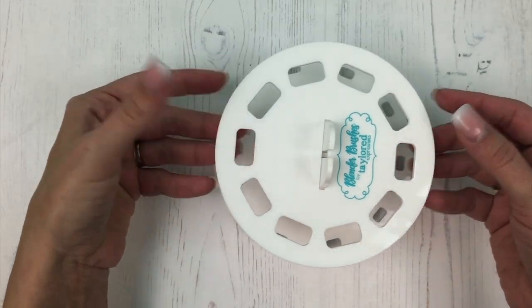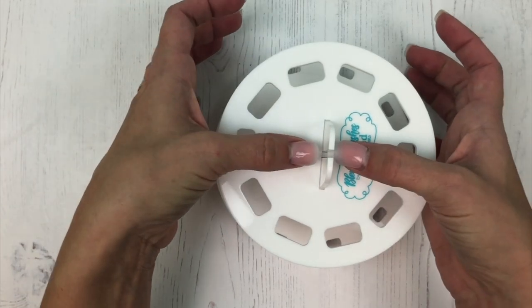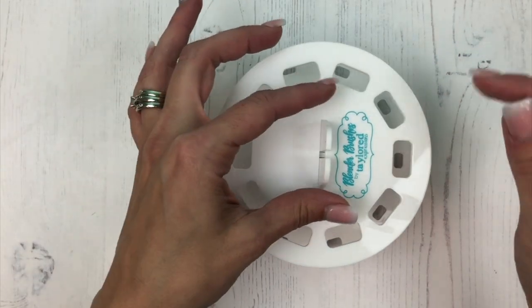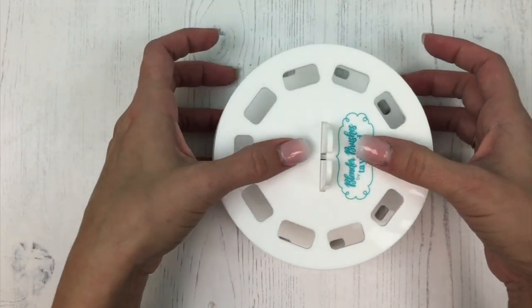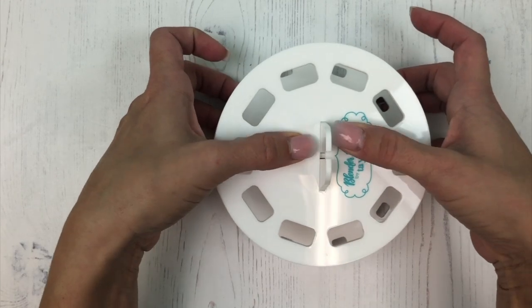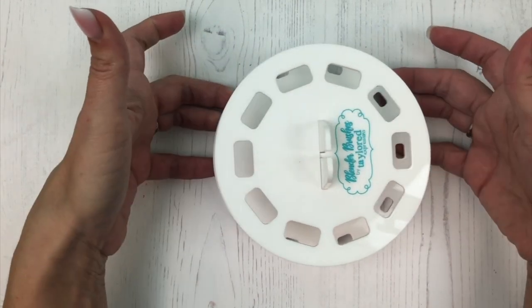You can see that one portion here that sticks up higher than the rest. We're going to place that over the top. Now when you press this into place, you want to put your thumbs here towards the middle, not towards the outsides. If you're putting pressure out here, that can crack this portion of your caddy.